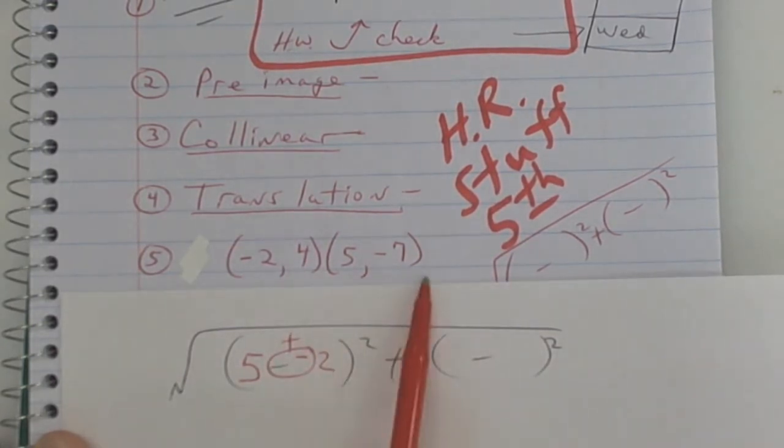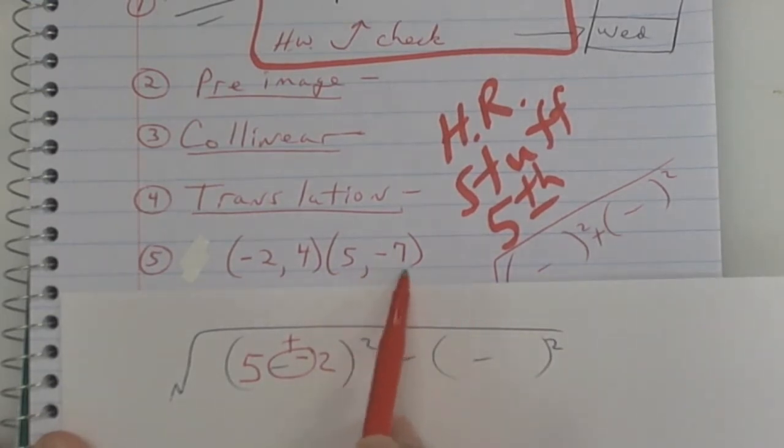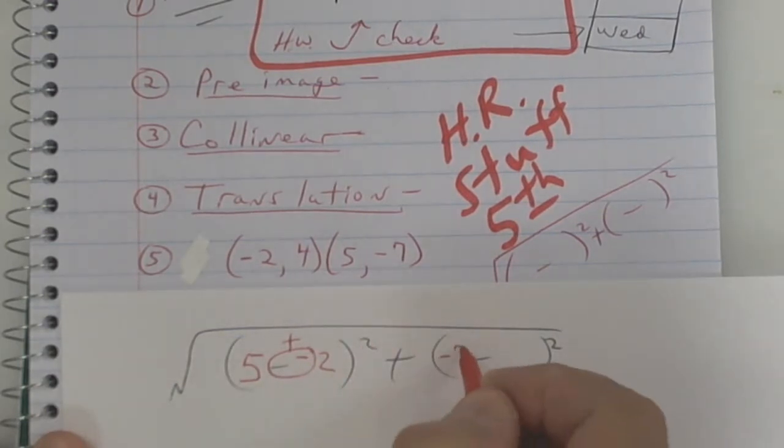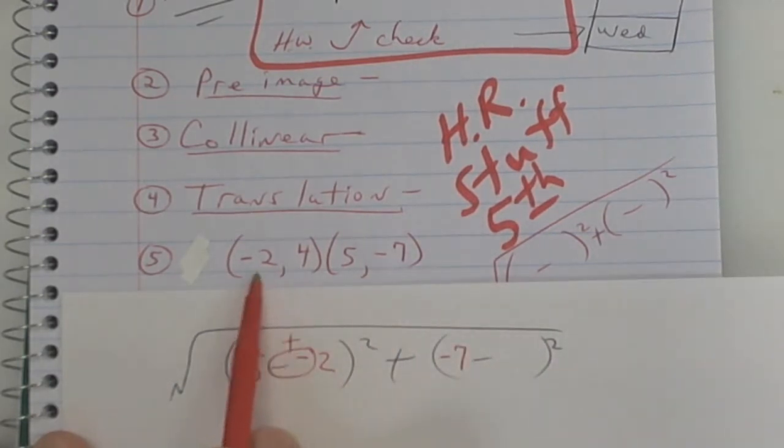So what's my y in this one? Guys, I'm getting a lot of talking while I'm teaching and I'm not going to accept that. I appreciate you trying to help, but right now I'm teaching. When I'm finished, you can help. So my y in this one is what? Negative seven. And what's my y in this one? Four.